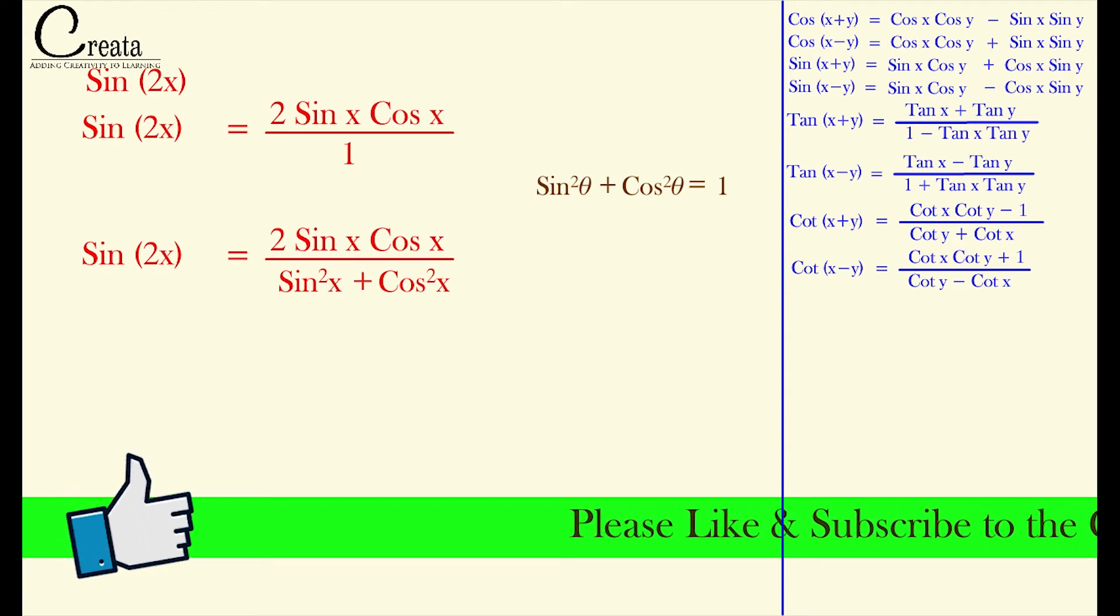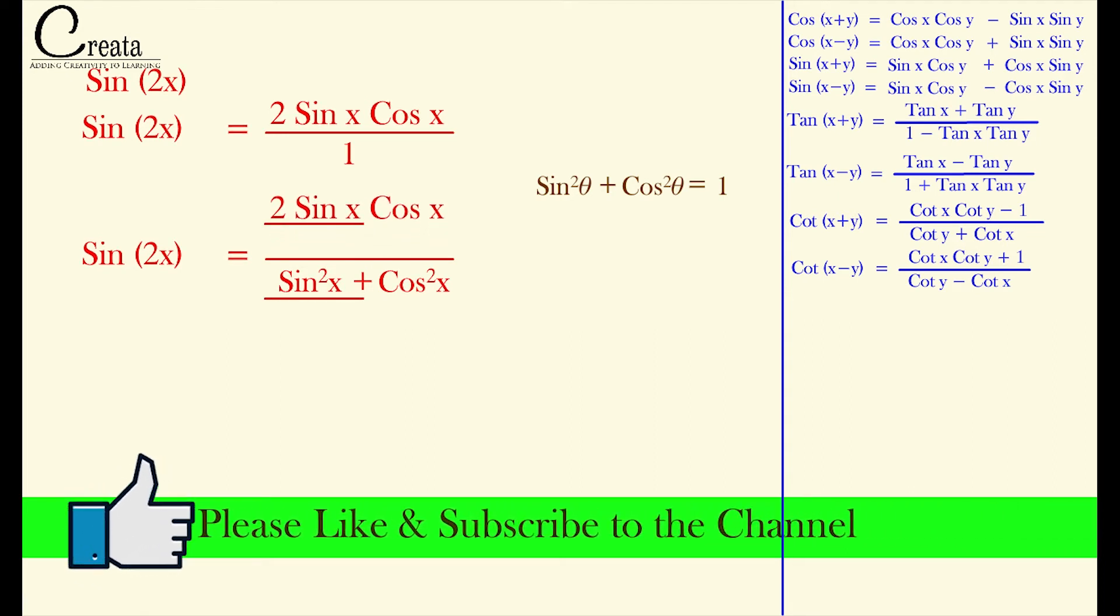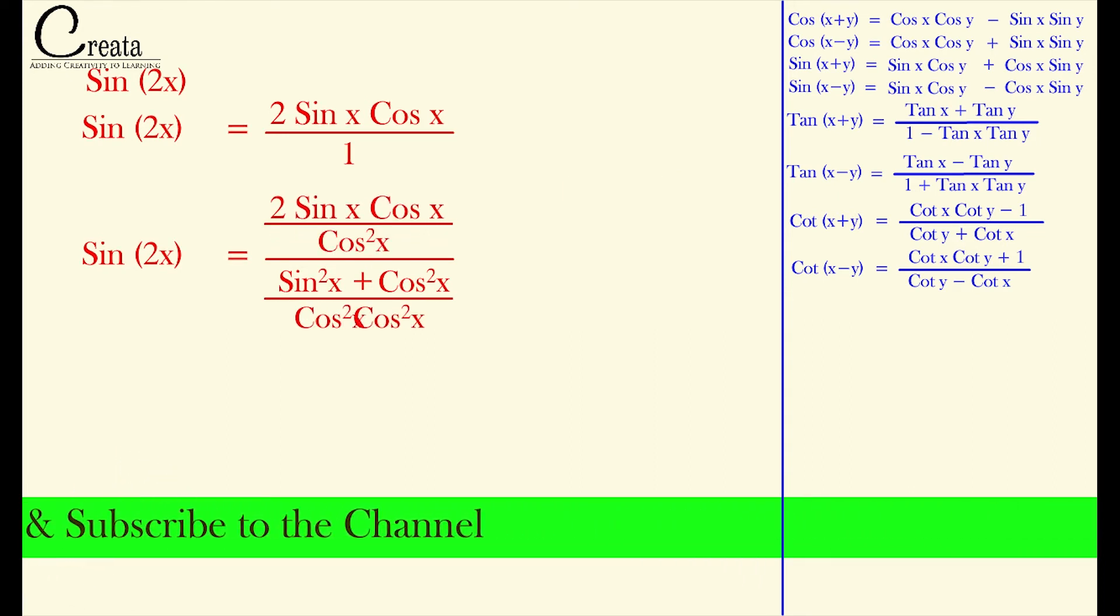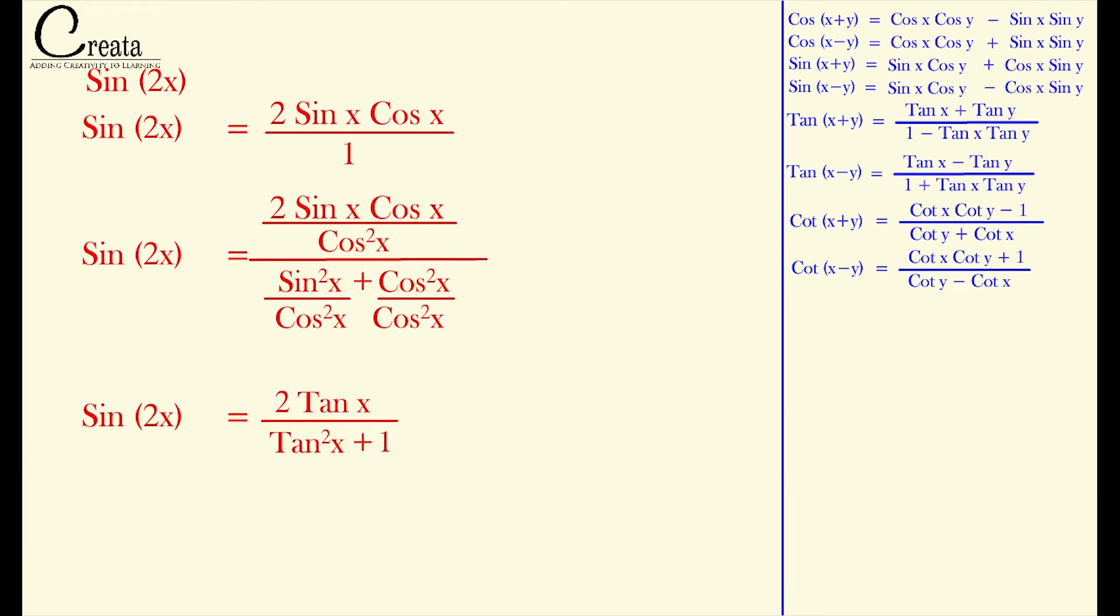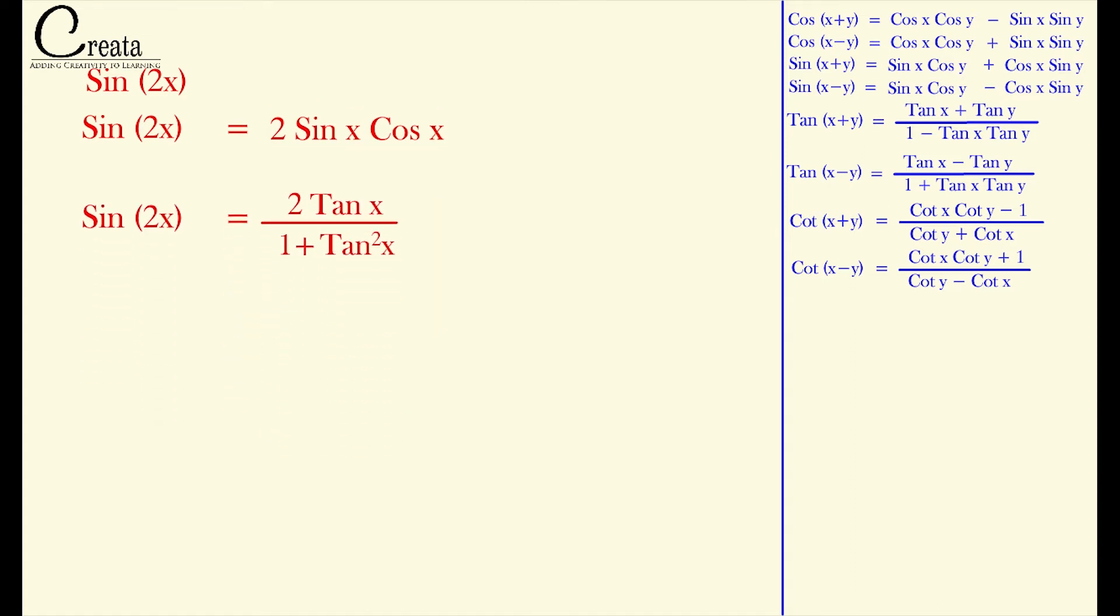Now further, if we divide numerator and denominator by cos²θ, we get sin2x in terms of tanx. This will be applicable where we need to convert sin2x to tan term. So we got two formulas of sin2x.